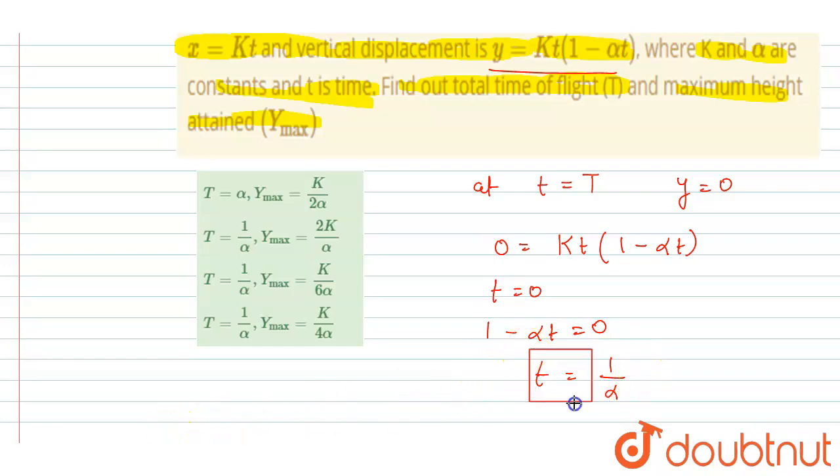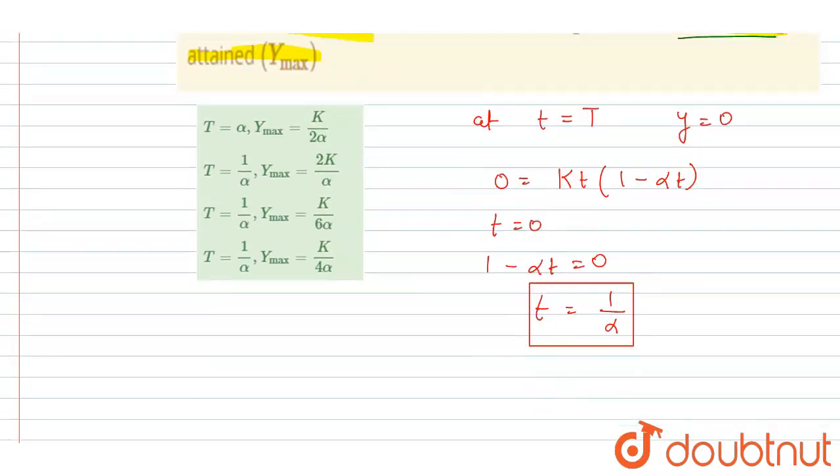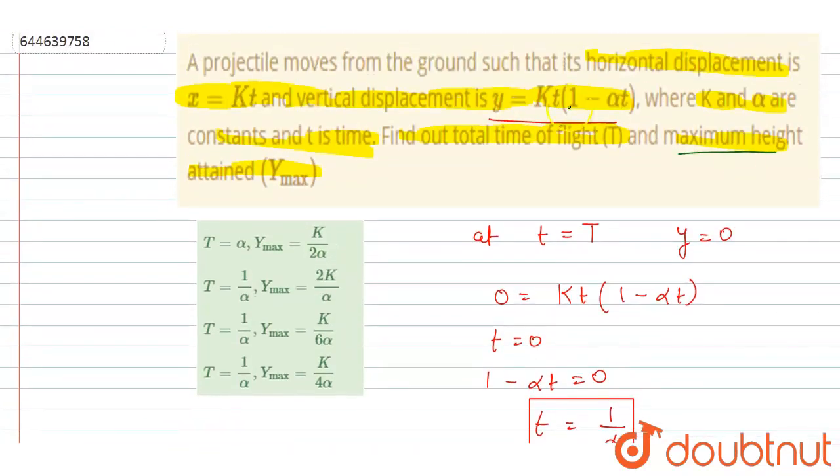time of flight. Moving toward the maximum height, at maximum height the y-component of velocity will be zero, that is dy/dt will be zero. Let's calculate dy/